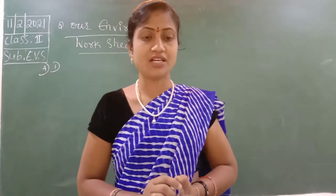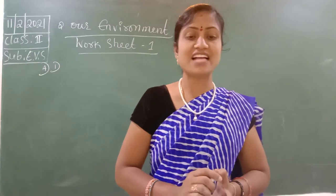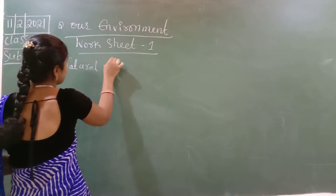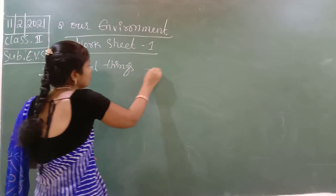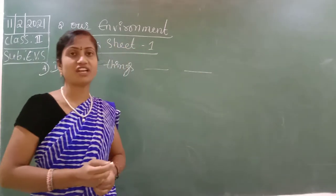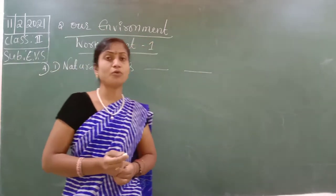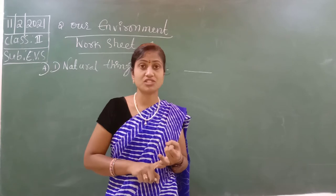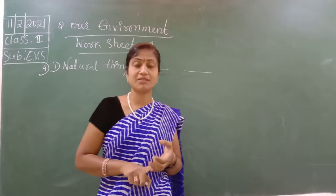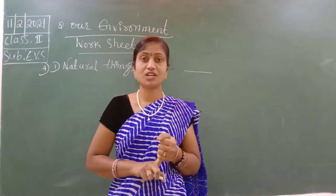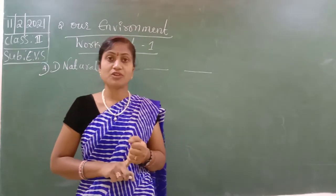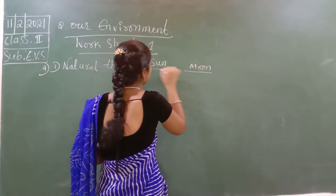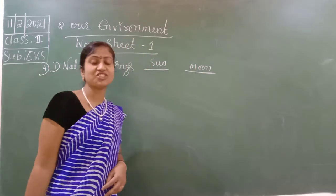First one, write names of two natural things. So natural things — we know very well, nature has given us so many things. What are they? Sun, moon, stars, clouds, mountains, rocks, plants, animals. These all are nature only given to us. So here we have to write two things only, natural things as your wish.